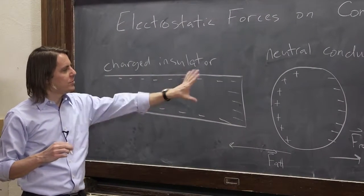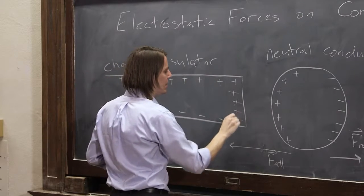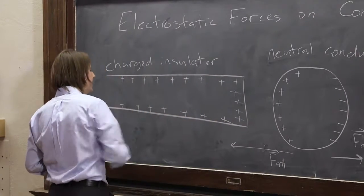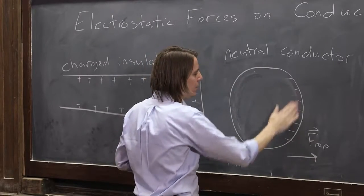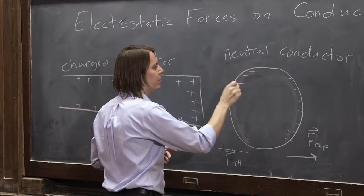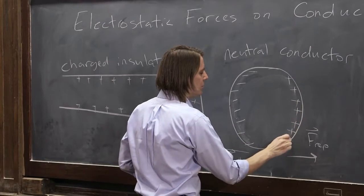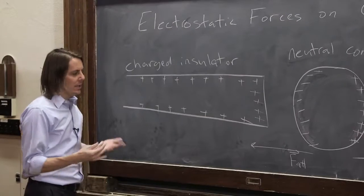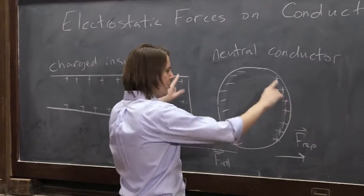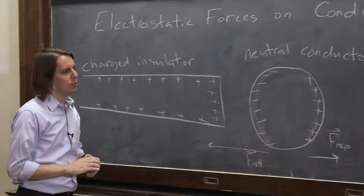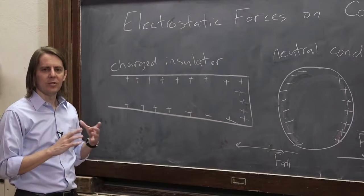It doesn't even matter which charge the Teflon rod has. Say we had a different kind of rod that was positively charged and we put a neutral metal nearby. The positive charge is going to attract its electrons like this, and that's going to leave this side exposed with positive charge. So everything's reversed, yet the forces remain the same. This is the attractive force region with a small separation, so it's a big force. The repulsive side has a large separation, so it's a small force. So neutral conductors are always attracted to charged objects.